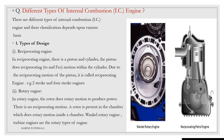The second is the rotary engine. In the rotary engine, the rotor does rotary motion to produce power. There is no reciprocating motion. A rotor is present in the chamber which does rotary motion inside a chamber. Turbine engines are the rotary type of engine.